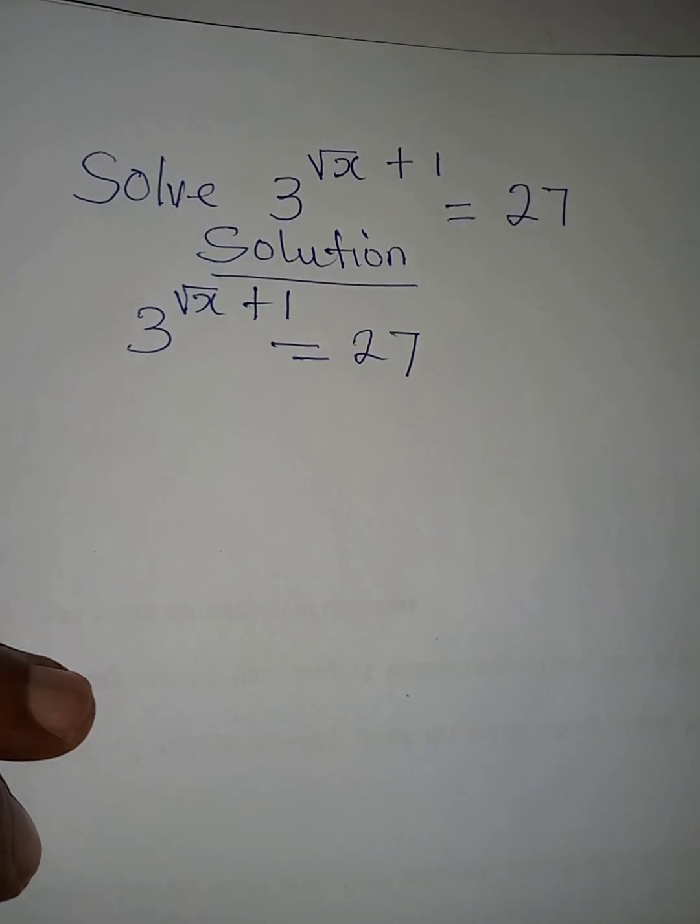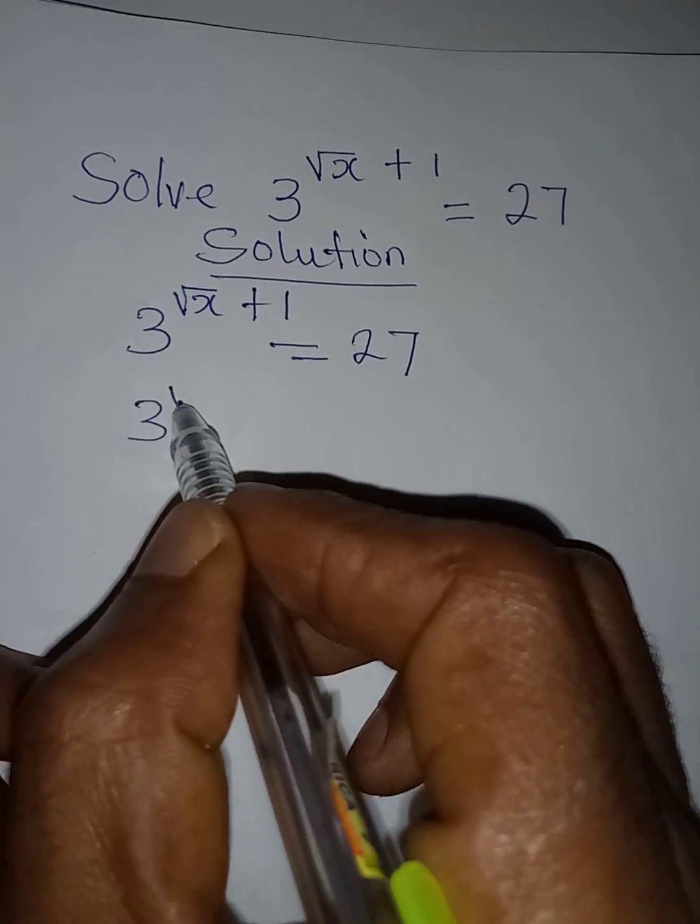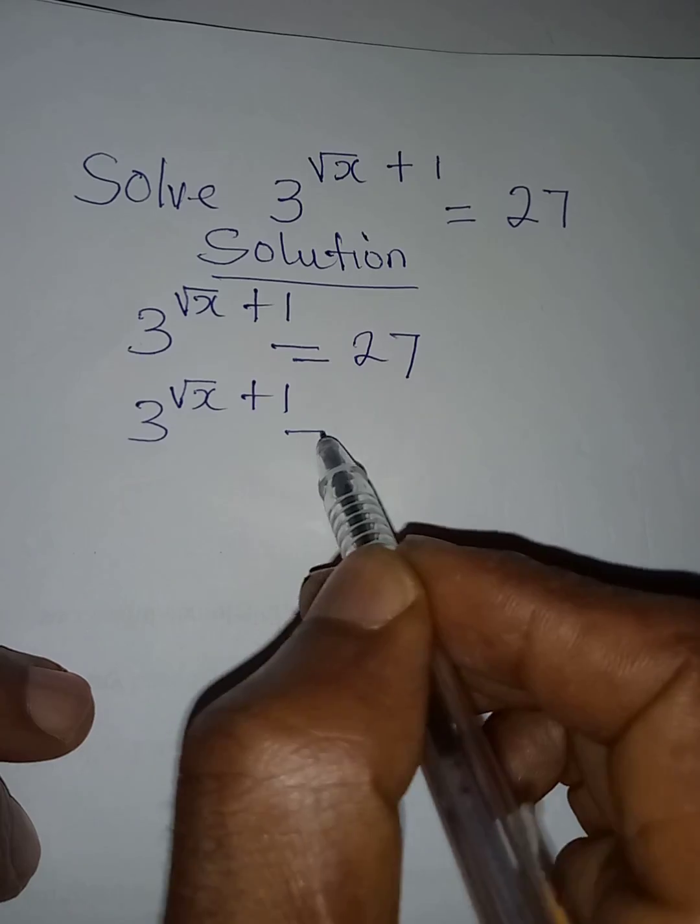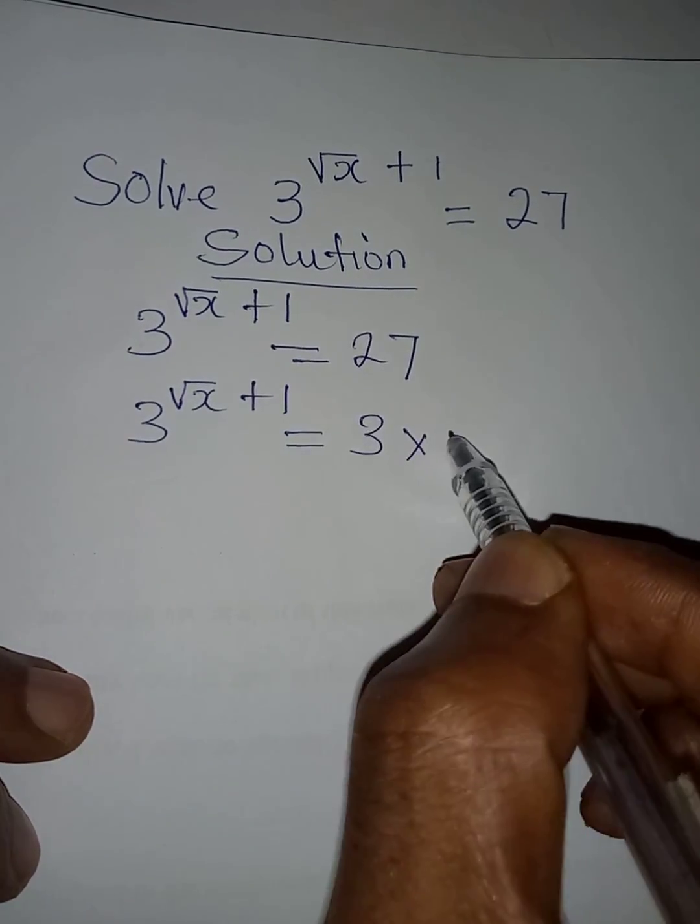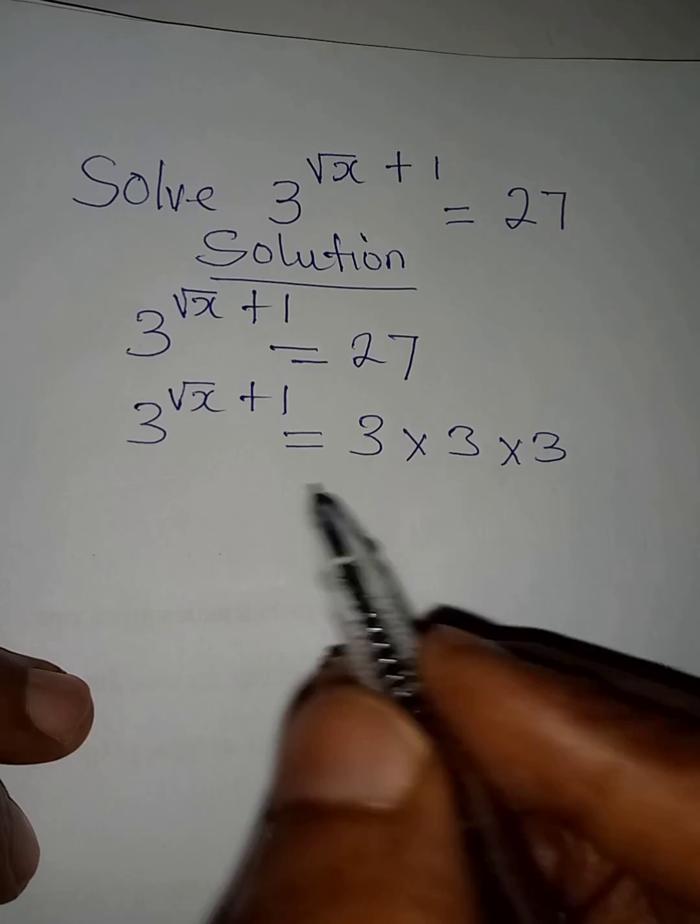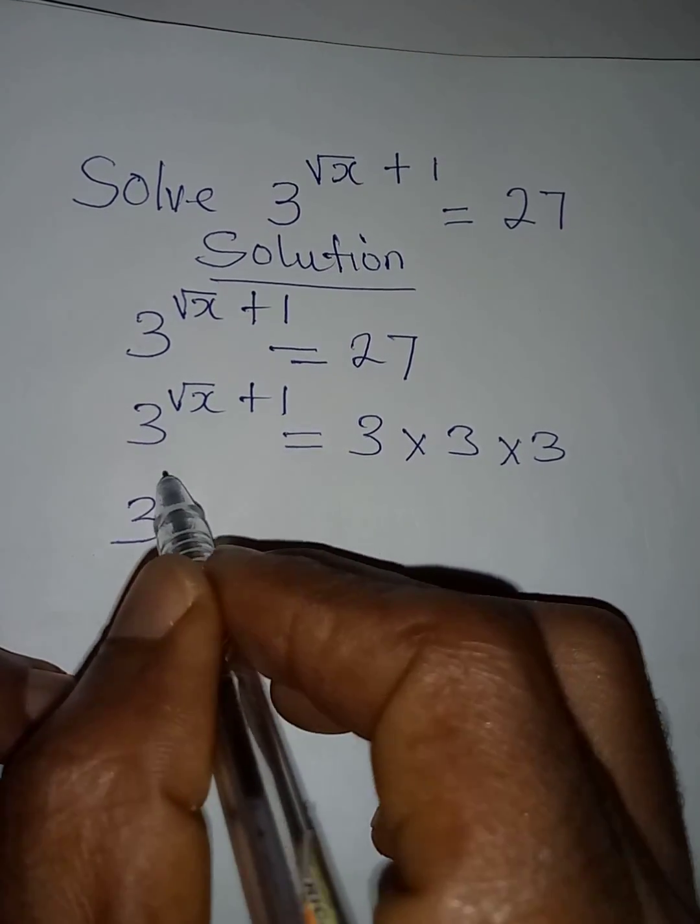So we're going to have 3 to the power of square root of x plus 1 to be equal to 3 times 3 times 3, because this will give us 27.